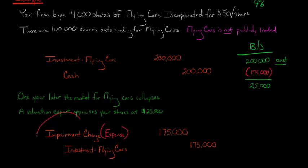So if someone were to go after this impairment and look at the balance sheet and say, hey, what is Flying Cars' value, at least in terms of the balance sheet, it would be $25,000, which is its original cost minus the impairment.